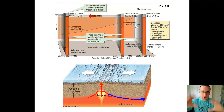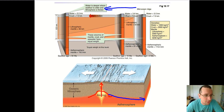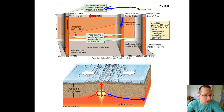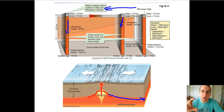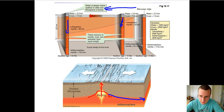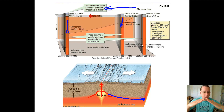The denser the lithosphere gets, the more it subsides. So as you move away from the mid-ocean ridge, the lithosphere gets denser and denser, sinking more and more into the mantle, becoming thicker and thicker as it cools. The further from the mid-ocean ridge, the more it can cool, the thicker the layer becomes, and the deeper it sinks — which explains why the mid-ocean ridge is higher up than the deep ocean basins at the edges.